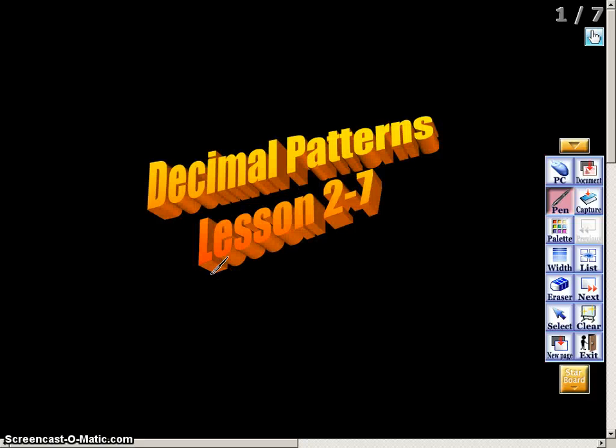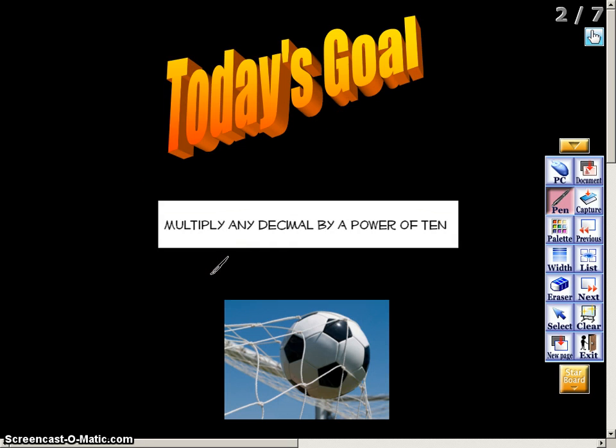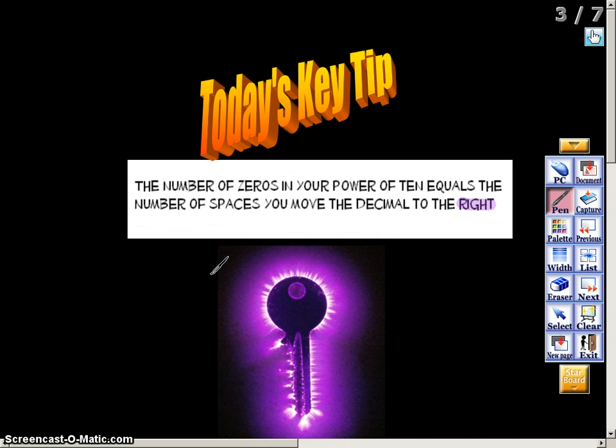This video is designed to show you some of the key concepts we went over in Lesson 2-7. Today's goal was to be able to multiply any decimal by a power of 10, and the key tip of the day is the number of zeros in your power of 10 equals the number of spaces you move the decimal to the right. It's important to understand that you only move the decimal to the right whenever you're multiplying by powers of 10.